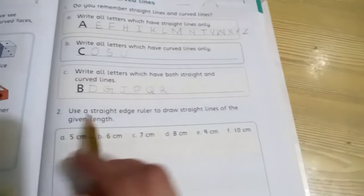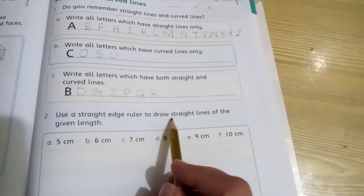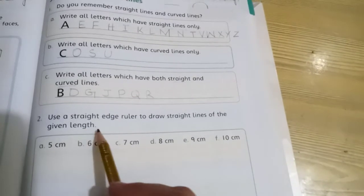Next, question number two: use a straight edge ruler to draw straight lines of the given length. Now you will draw the lines of the measurements in front of these numbers.